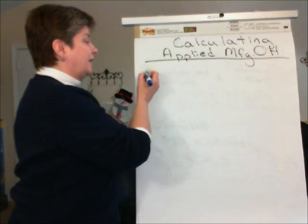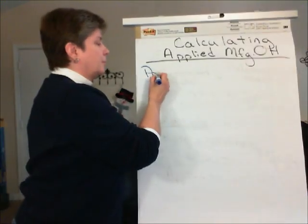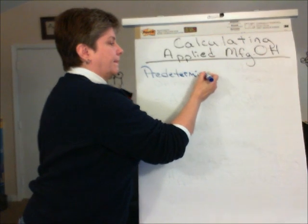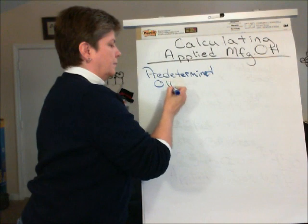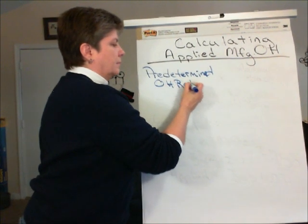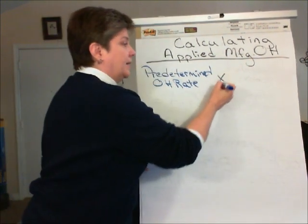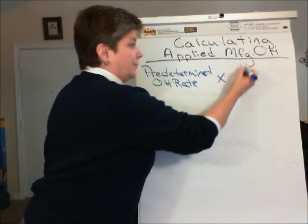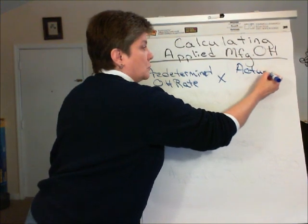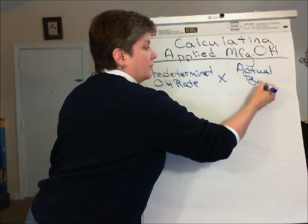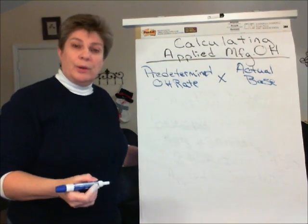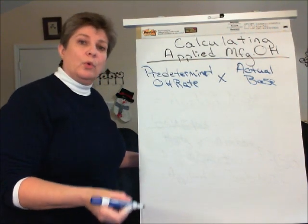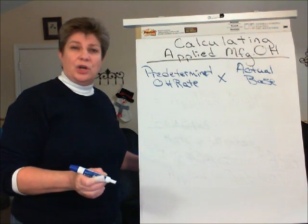We take that predetermined overhead rate and multiply that rate times the actual activity base, or the actual number of direct labor hours used on that job, or the actual number of machine hours used on that job.